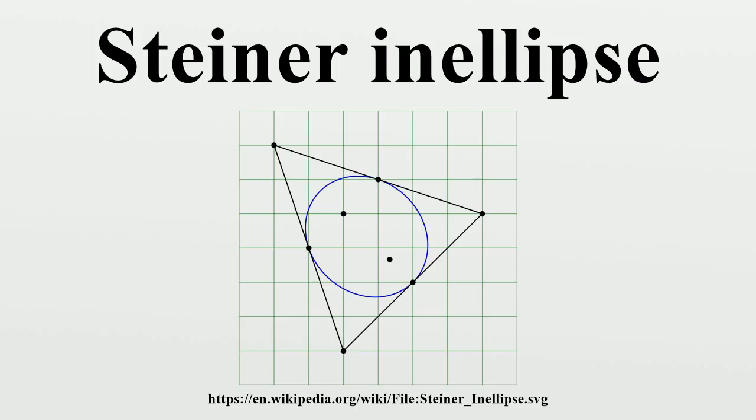The Steiner ellipse of a triangle can be generalized to n-gons. Some n-gons have an interior ellipse that is tangent to each side at the side's midpoint. Marden's theorem still applies. The foci of the Steiner ellipse are zeros of the derivative of the polynomial whose zeros are the vertices of the n-gon.